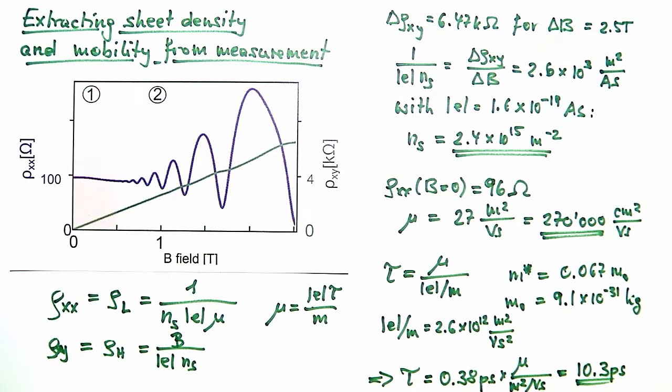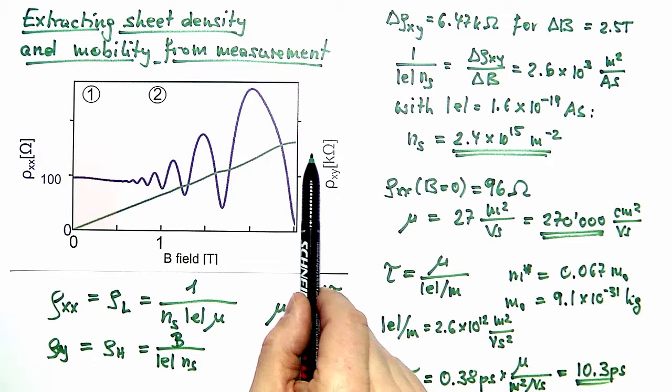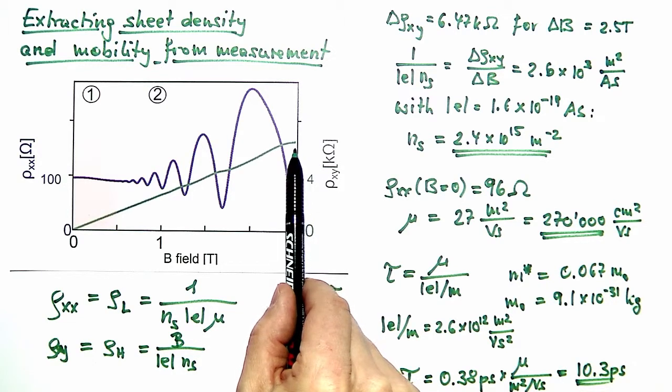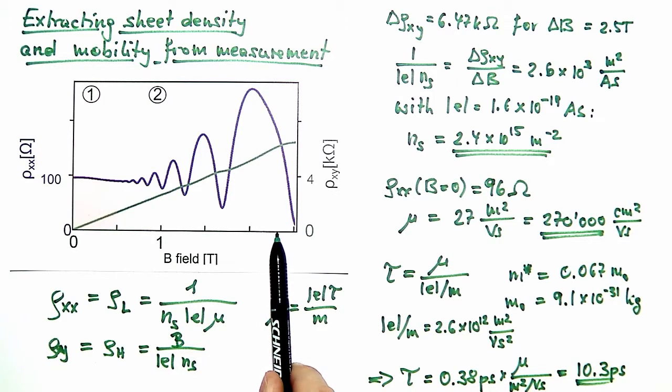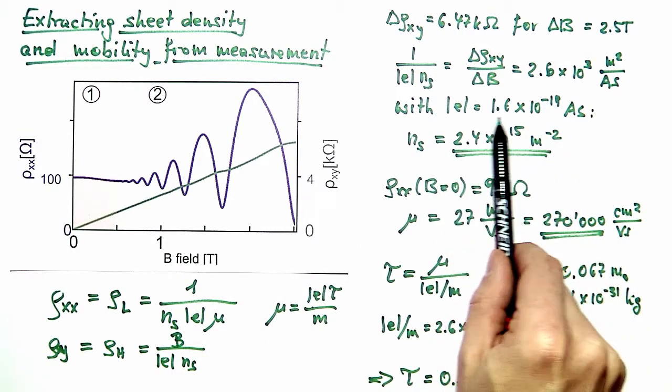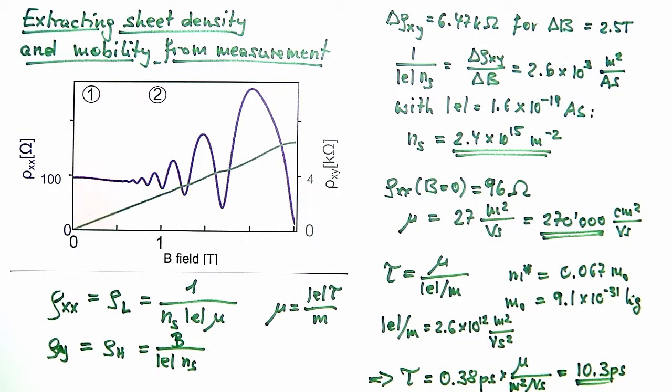So we see that 6.25 kilo-ohms would be roughly here in our graph and I read here a field of 2.3, 2.4 tesla. And this would be the density in 10^15. So I read these 2.3, 2.4 times 10^15 electrons per square meter in agreement with our calculated result. So that is the first trick.